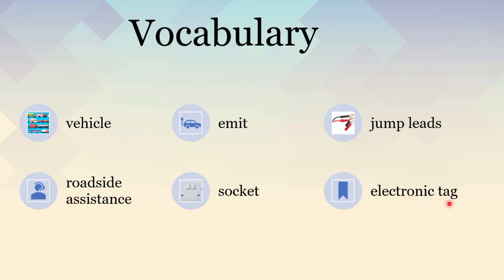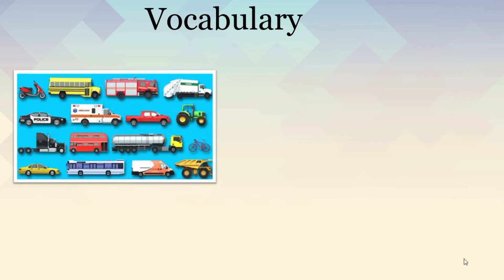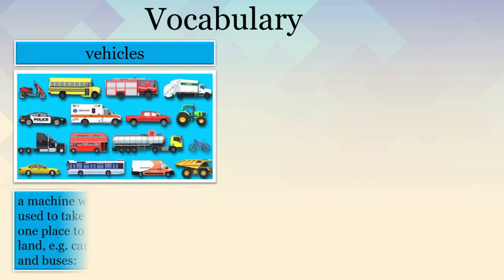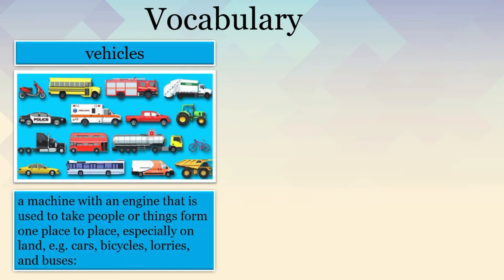Now let's take a look at them. Look at this picture. What do the things have in common? Excellent. They all can be used to take people or things from place to place. They are vehicles. A vehicle is a machine with an engine that is used to take people or things from place to place, especially on land. For example, cars, bicycles, lorries, and buses.